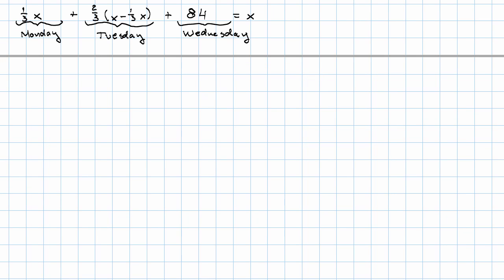First, we'll simplify. So I've got one-third x plus two-thirds times x minus one-third x. That's one-x minus one-third x, so that's two-thirds x. Next, we'll do this multiplication. We have one-third x, we didn't do anything to that, plus four-ninths x plus 84 equals x.